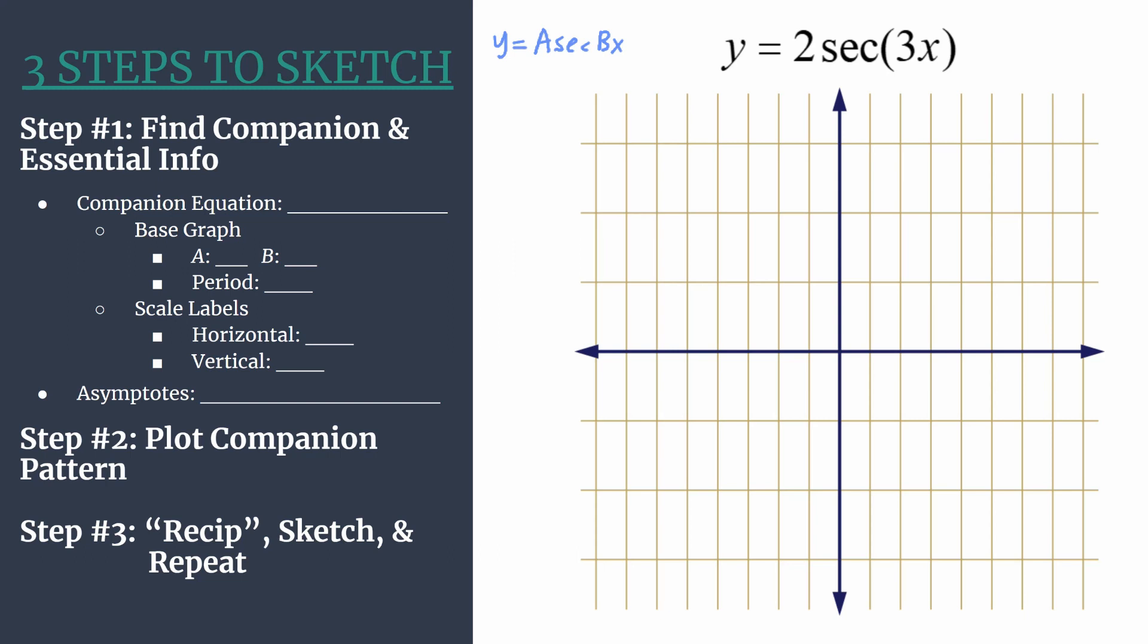Let's dive into step one: find our companion equation and its essential information. The companion equation is what we'll graph and then take a form of the reciprocal, or we'll flip it into the secant graph. Our companion equation is just the reciprocal of secant, so it'll be y equals 2 cosine of 3x.